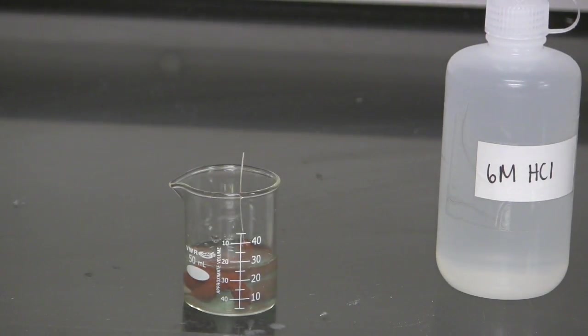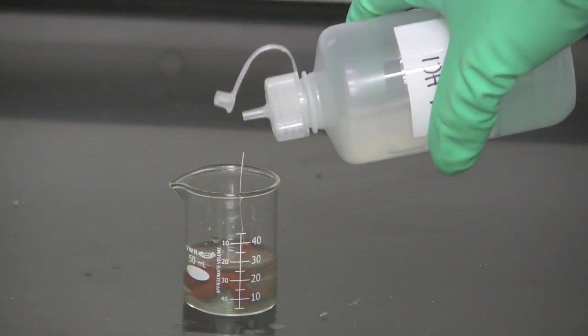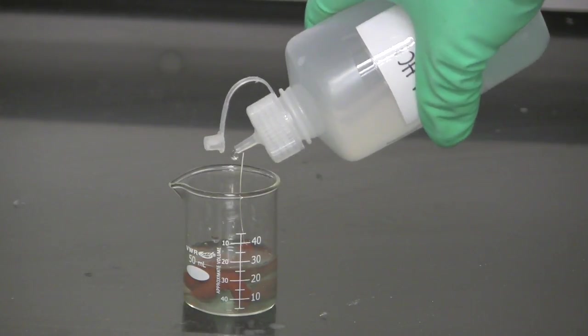Alright, so it's been 30 minutes. The solution has gone pretty much colorless now. I'm going to add five drops of six molar HCl. And that will have the effect of dissolving any aluminum salts that might have formed.